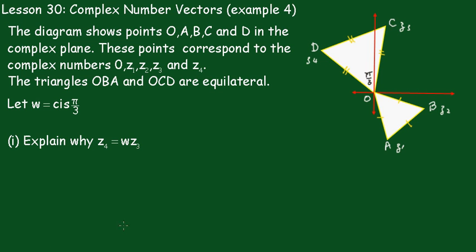These points correspond to complex numbers O, Z1, Z2, Z3 and Z4 as indicated on the diagram. The triangles OBA and OCD are equilateral which means all the angles must be 60 degrees or π upon 3. Now we're going to let W equal cis π upon 3.